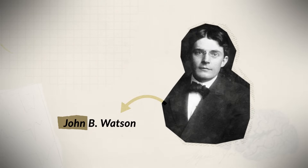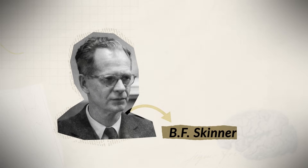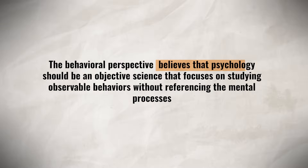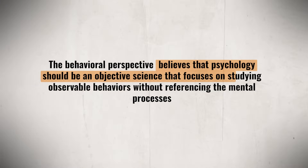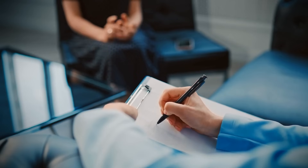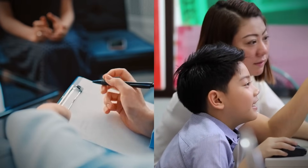Our next approach to psychology came actually as a rejection to the psychodynamic approach. One major criticism was that it seeks to study something that is hidden and cannot truly be studied. Psychologists such as John B. Watson, Ivan Pavlov, and eventually B.F. Skinner believed in an approach that would become known as behaviorism, which focuses on observable behavior. The behavioral perspective believes that psychology should be an objective science that focuses on studying observable behaviors without referencing the mental processes. Behaviorism emphasizes the role of the environment in shaping behavior through reinforcement and punishment, and looks at how we model our behavior off of others' actions and consequences. This approach is often used in therapy and education to modify behavior through reinforcement and other conditioning techniques.